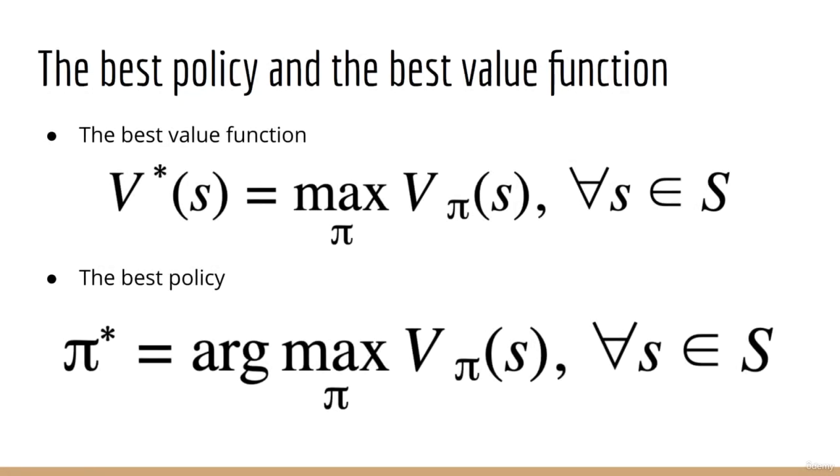From here, we can define the best policy and the best value function. The best value function is the value function for which there is no greater value function. It's the max over all possible policies of v of s given pi. So, we'll denote it with the symbol v star. Similarly, the best policy will be the argmax over all policies pi. So, we call that pi star.